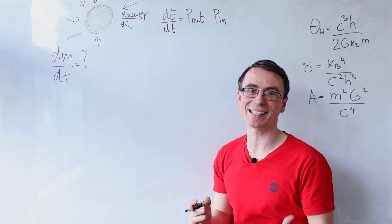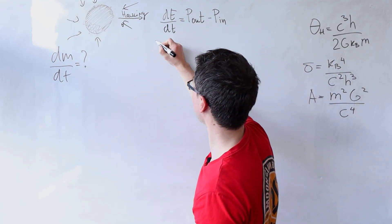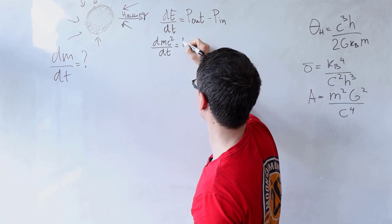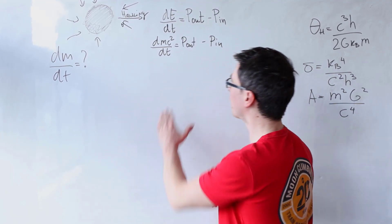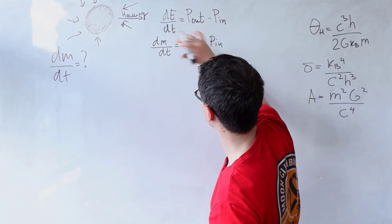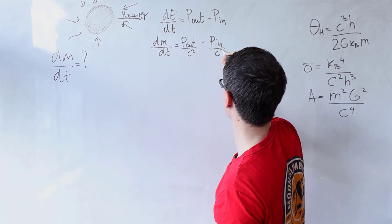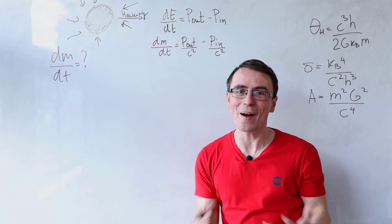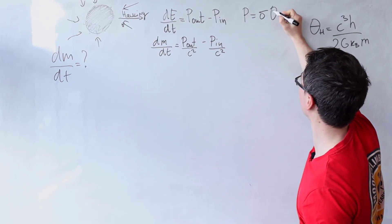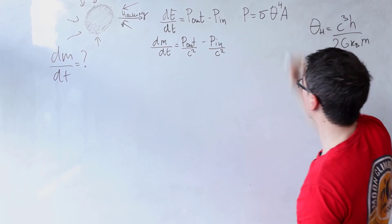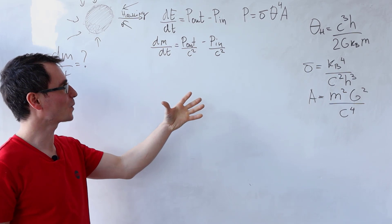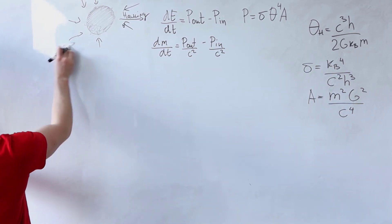Now let's use E = mc² for the left-hand side. The time derivative of mc² equals P_out minus P_in. Since c is just a constant we can take it outside the derivative and divide both sides by c². Now I can apply Stefan-Boltzmann's law: power equals Stefan's constant multiplied by temperature to the power of 4, multiplied by the surface area. To find dM/dt in terms of all fundamental constants is going to be a lot of algebra, so let's make some space.